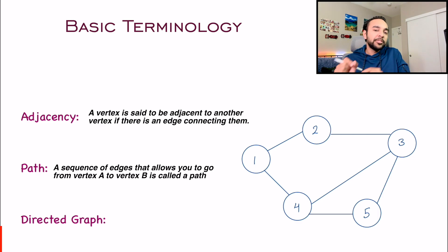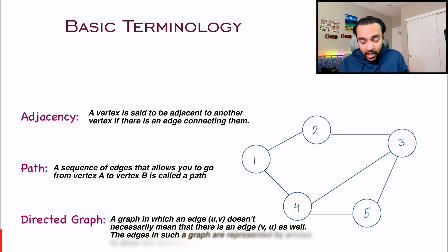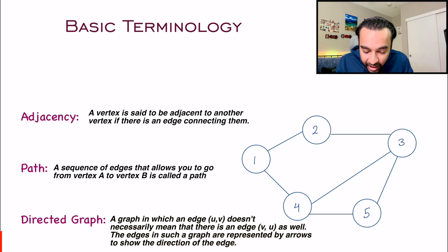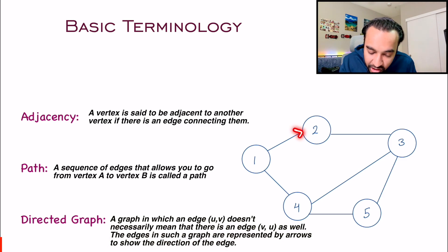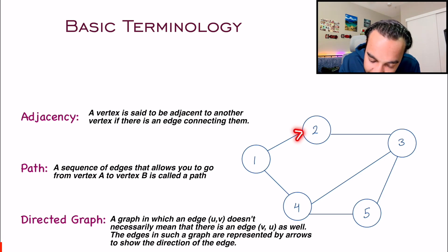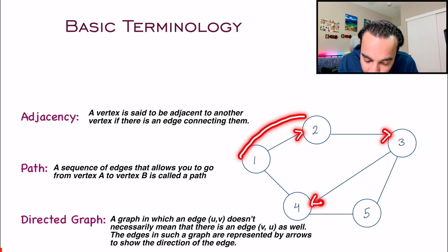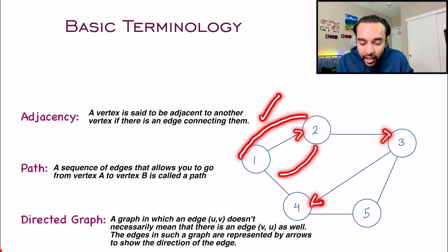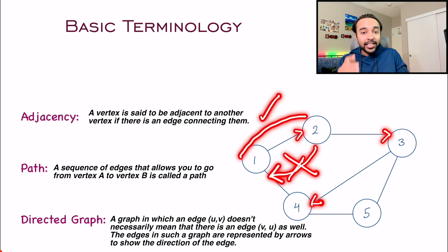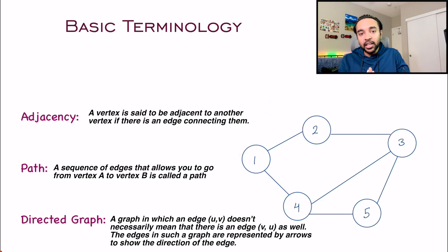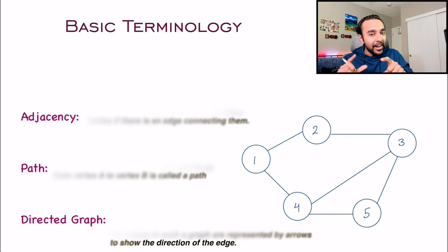The next term you must be aware of is a directed graph. Usually in a graph when you have edges and you don't see any directions, this is a non-directed graph. If you have defined edges with arrows, this becomes a directed graph. It means you can go from node one to node two, but you cannot go back from two to one — that direction is prohibited. This is what a directed graph and an undirected graph actually means.